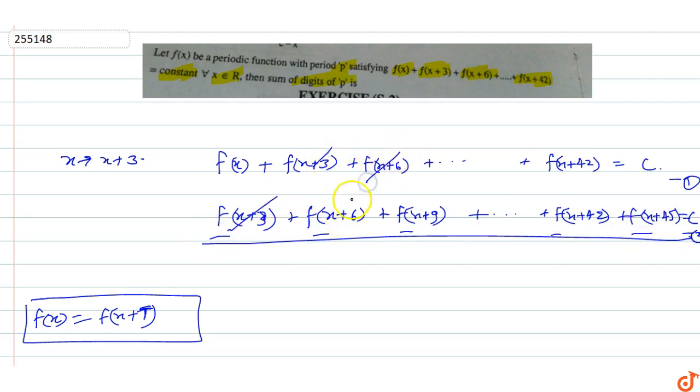From f(x+42), everything cancels except f(x) minus f(x+45).